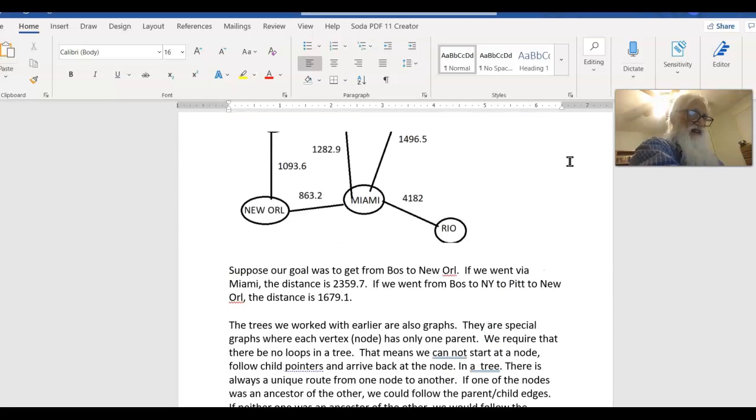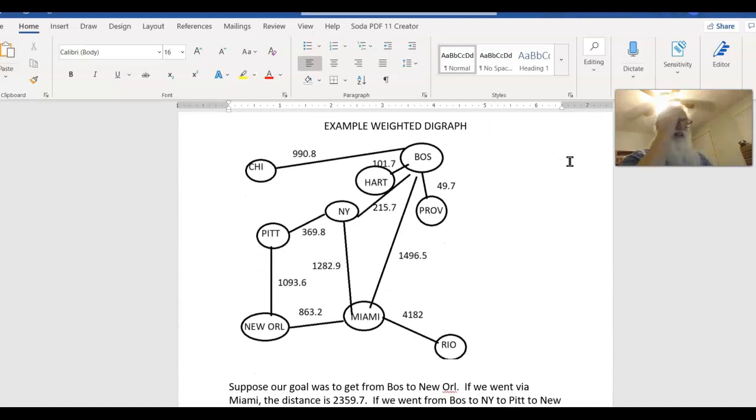We don't want to go back and look at them because we've already looked from there. So here's my example. This is with this graph here. Whenever I do a graph, I have to decide what order I'm going to look at the children. So I decided in this particular case, the children will be in counterclockwise order, beginning at noon. So Boston's children are in order: Chicago, Hartford, New York, Miami, Providence. New York's children are in order: Pittsburgh, Miami, Boston. So that's just an ordering - we need one, we just have to pick one.